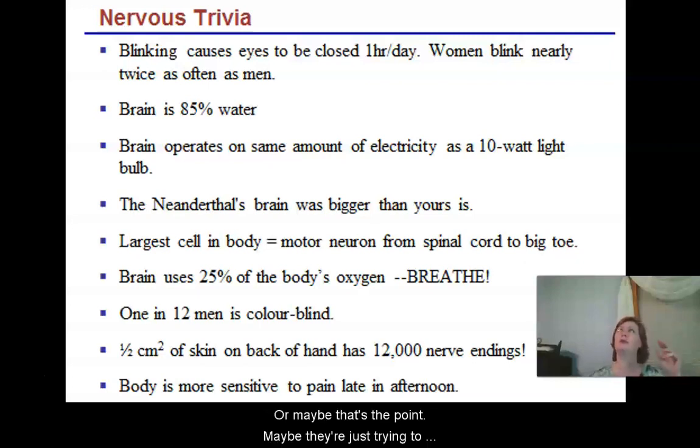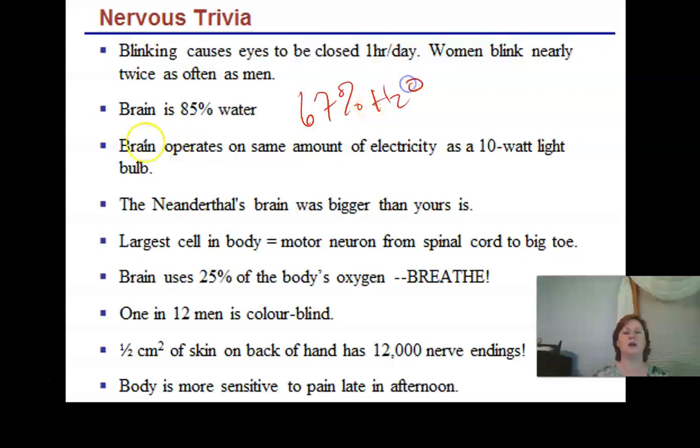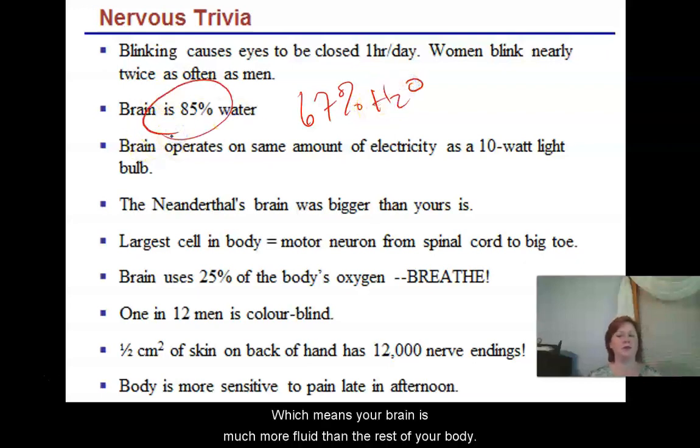Your brain is about 85% water, and if you remember back to some early stuff, your body is about 67% water, which means your brain is much more fluid than the rest of your body. In fact, it's about the consistency of pudding. Typically, if we do brain dissections in anatomy class, we use preserved brains because it makes it easier for us to see the different structures and they maintain their integrity. Otherwise they just kind of go swoosh on the table.